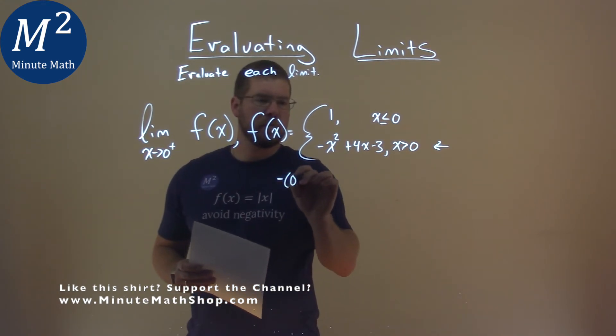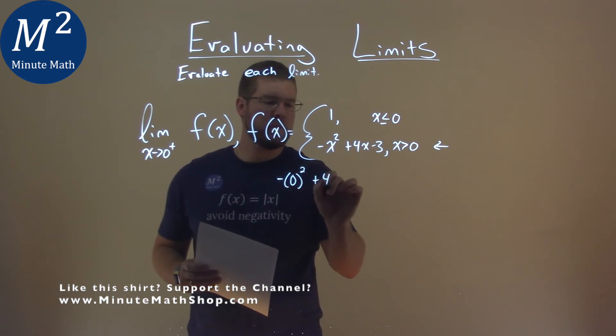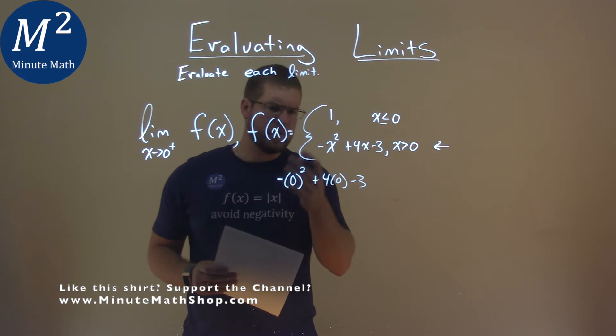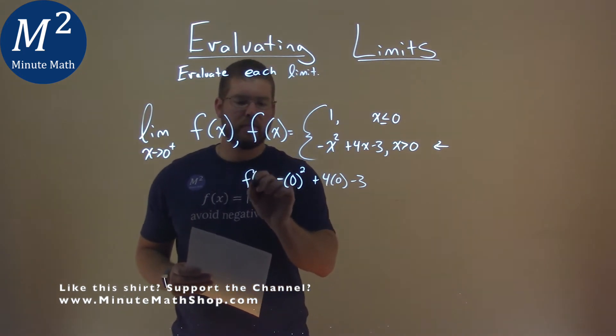So we take negative zero squared plus four times zero minus three, and let's solve it. F of zero, we'll solve it.